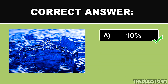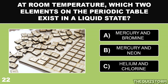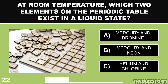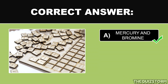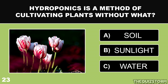Approximately what percentage of an iceberg is visible above water? And the correct answer is 10%. At room temperature, which two elements on the periodic table exist in a liquid state? And the answer is mercury and bromine.